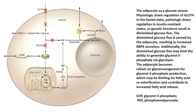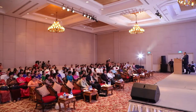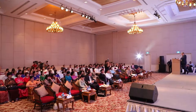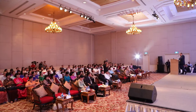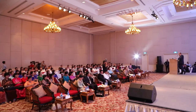In adipose tissue, when blood flow — specifically the glucose transporter into the adipose tissue — is blocked or down-regulated, the adipose tissue has to rely on gluconeogenesis for G3P. As a result, there will be more fatty acid breakdown.